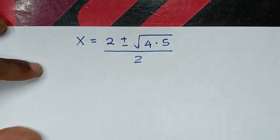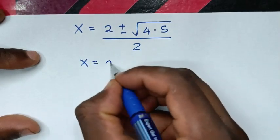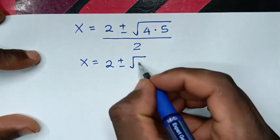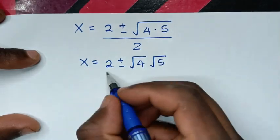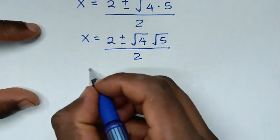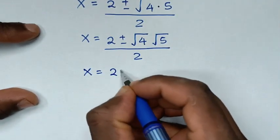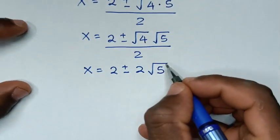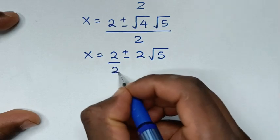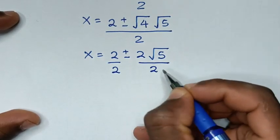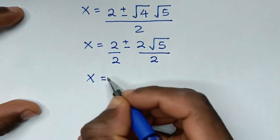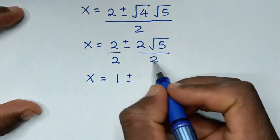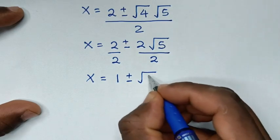So it will be x equal to 2 plus or minus square root of 4 times square root of 5, over 2. Then square root of 4 is 2, so it becomes 2 plus or minus 2 times square root of 5, all over 2. Dividing each term by 2 gives x equal to 1 plus or minus square root of 5.